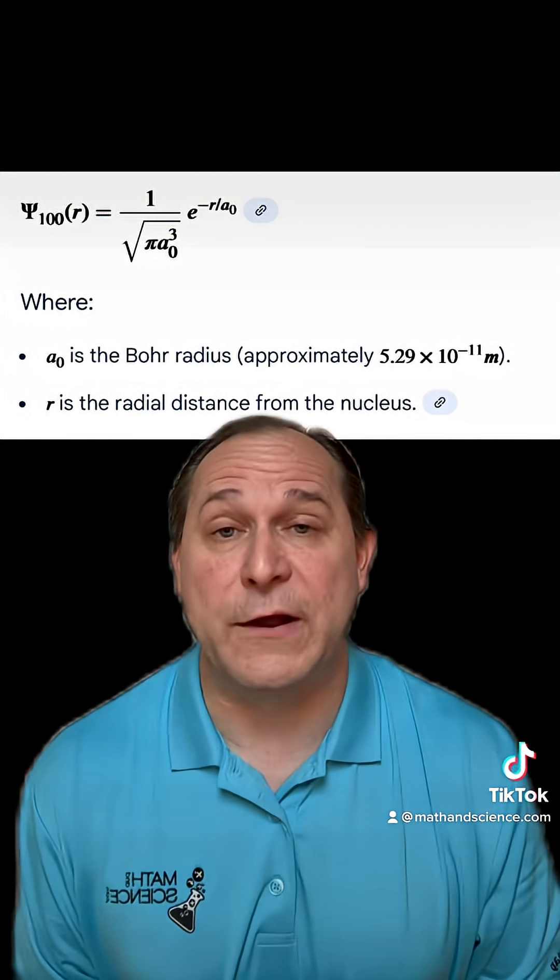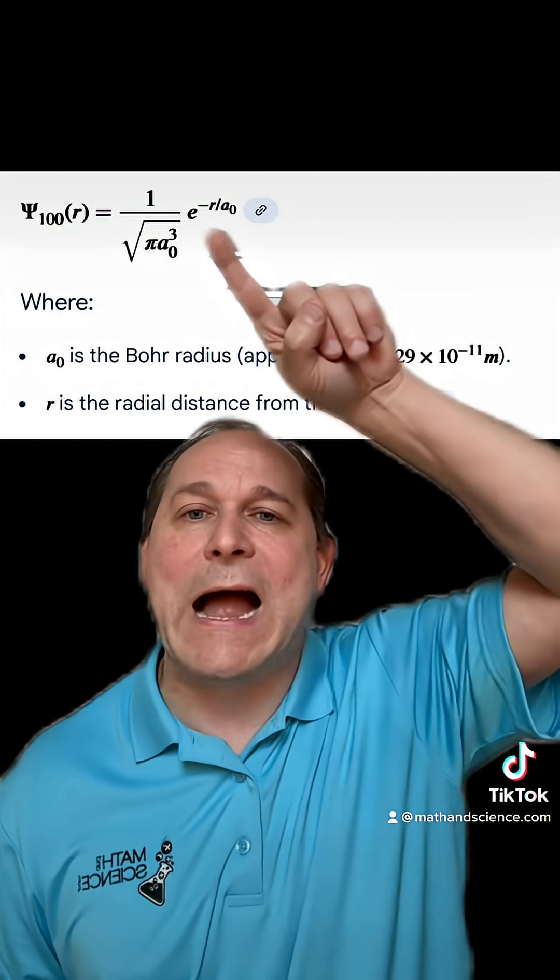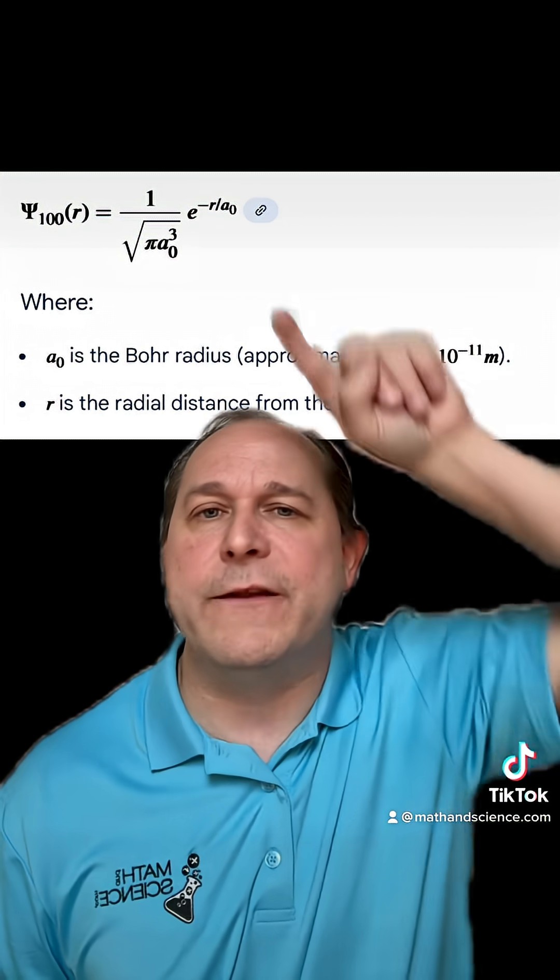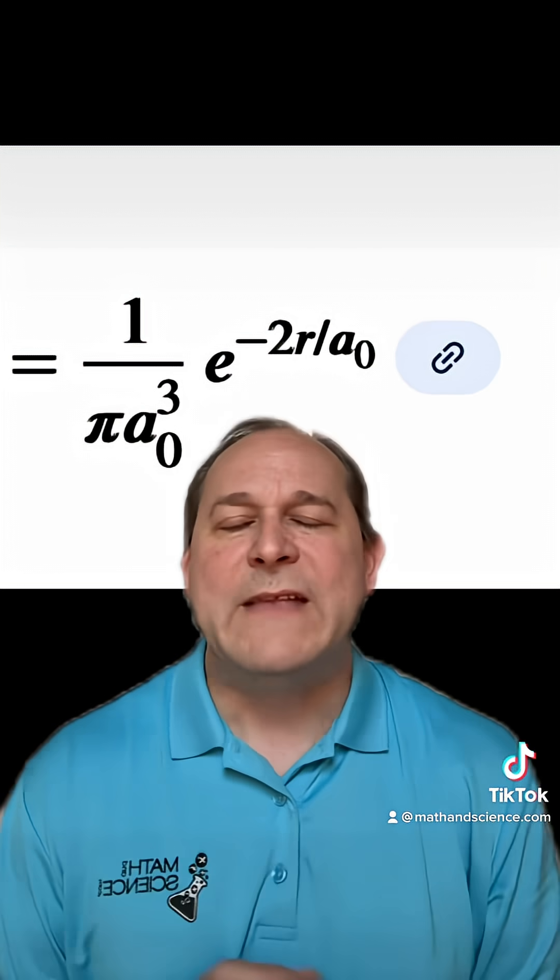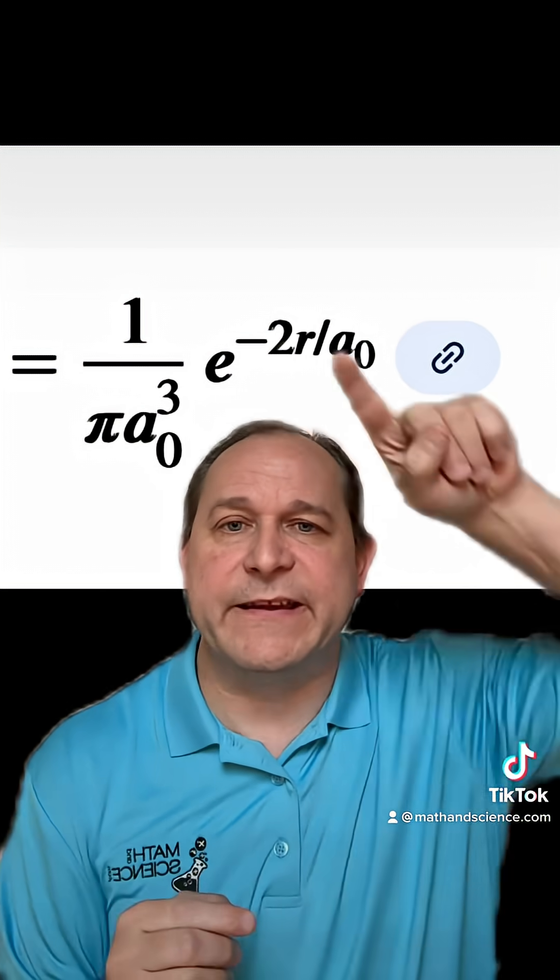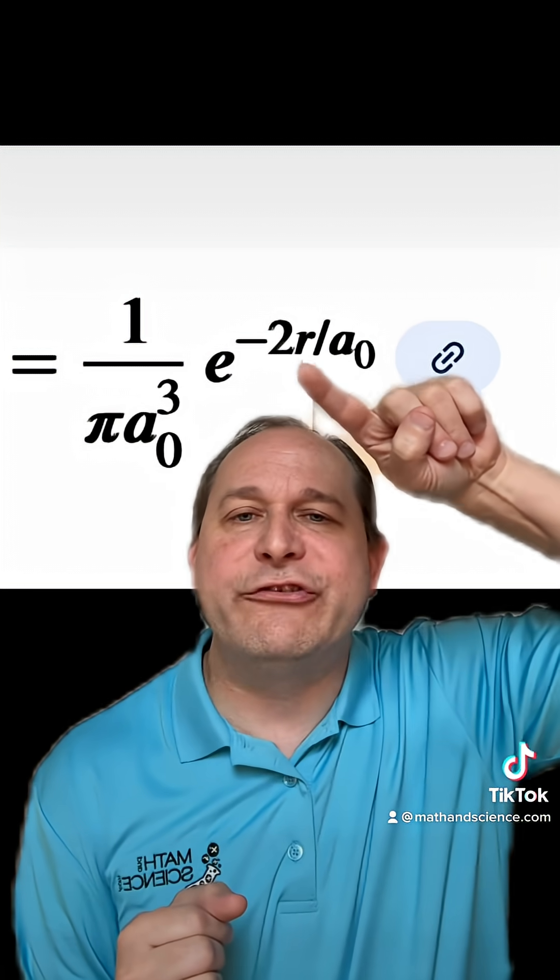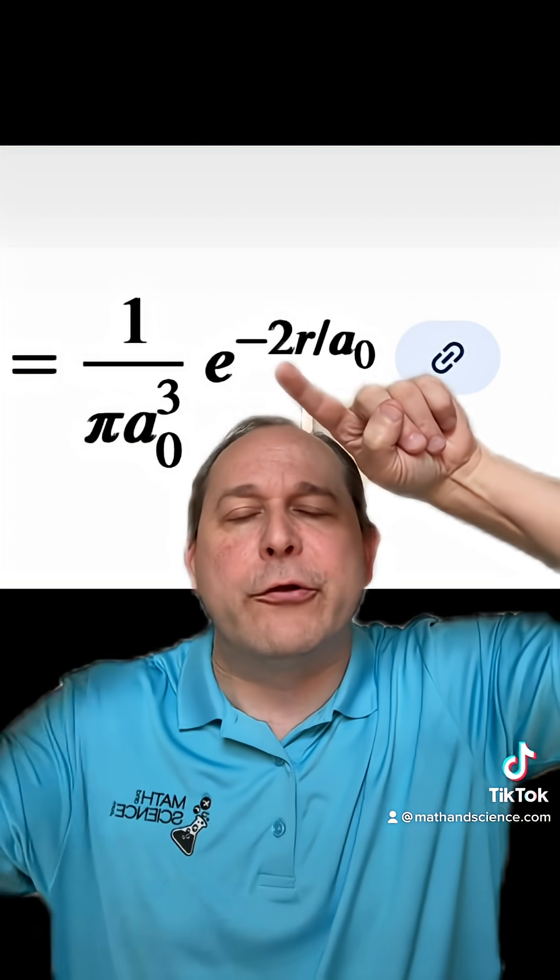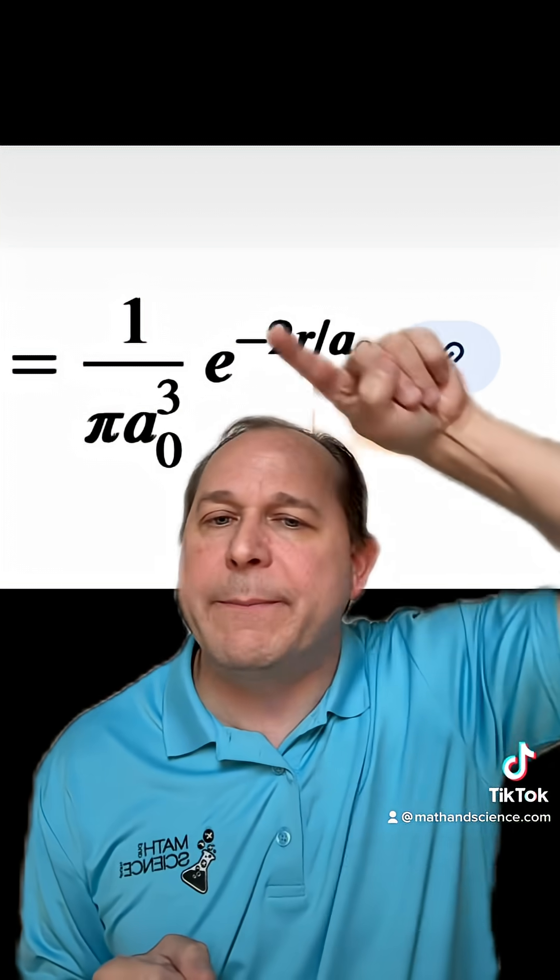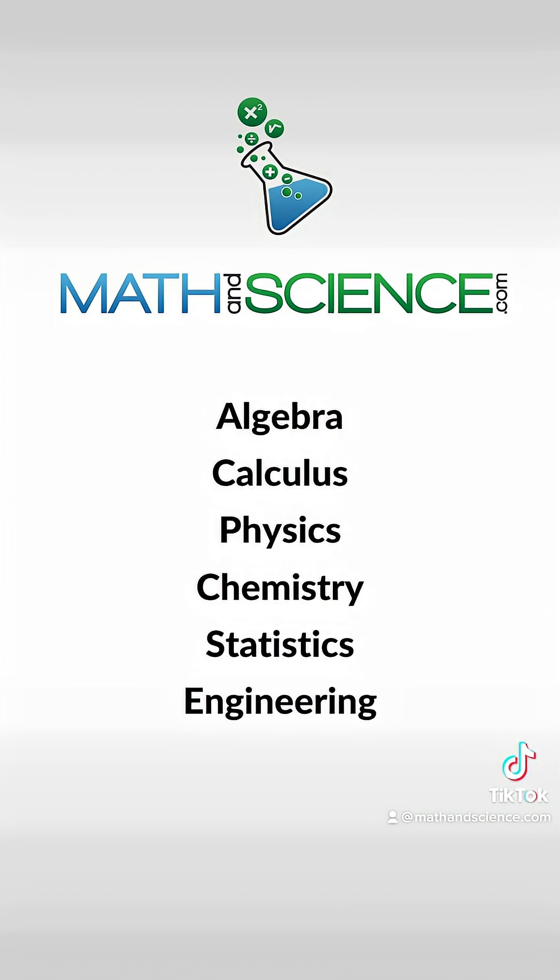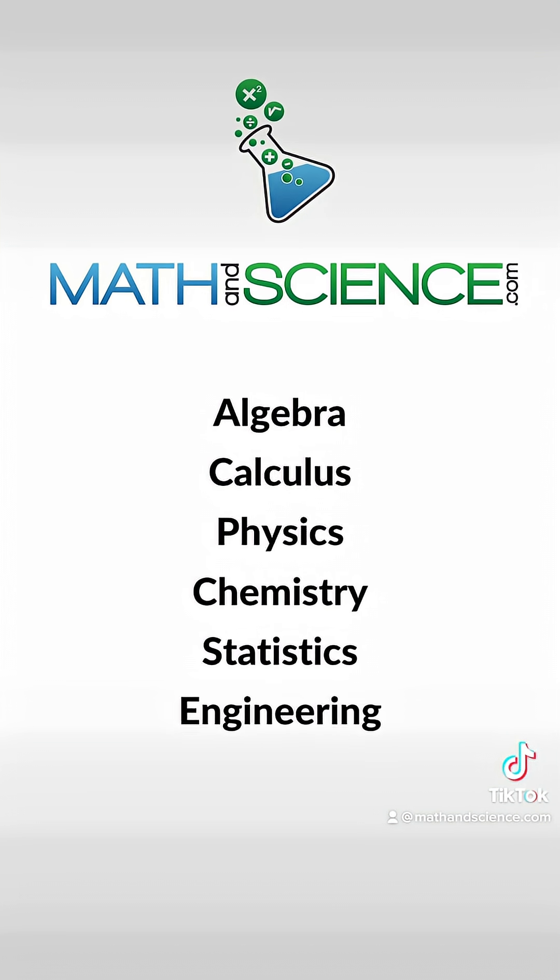Here is the wave function for an electron around a hydrogen atom. There's a constant here. The constant doesn't matter. e to the minus R. That's all I want you to focus on now. When you square that wave function, that's what gives you the probability density. You end up with an e to the minus 2R there. That means as the radius, you get farther and farther away from the atom, the probability never gets to zero. It just gets infinitely close to zero. Learn anything at mathandscience.com.